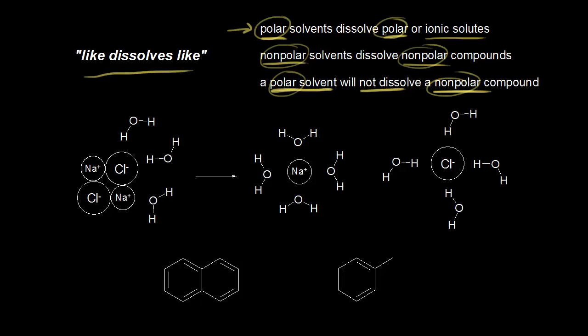Let's go back to the idea of a polar solvent being able to dissolve a polar compound, or a polar solvent dissolving an ionic compound like sodium chloride. We know from experience that sodium chloride, or salt, is soluble in water. Over here on the left, we have part of a salt crystal. Crystals are held together by attractive forces — the positively charged sodium cation is attracted to the negatively charged chloride anion. So opposite charges attract, and our crystal is held together by these attractive forces.